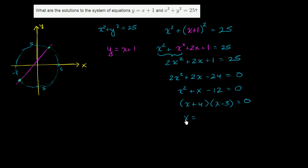So x could be equal to, well, if x plus 4 is 0, then that would make this whole thing true. So x could be equal to negative 4. Or x could be equal to positive 3. So this right over here is a situation where x is negative 4. This right over here is a situation where x is 3.